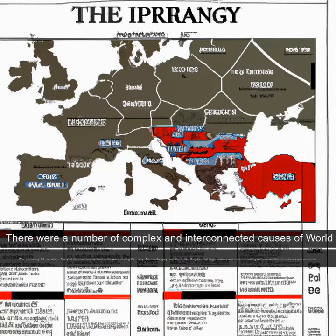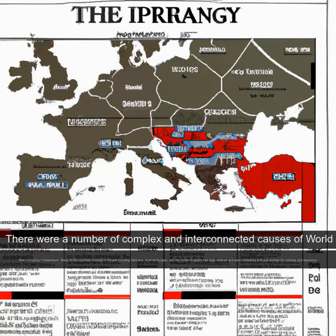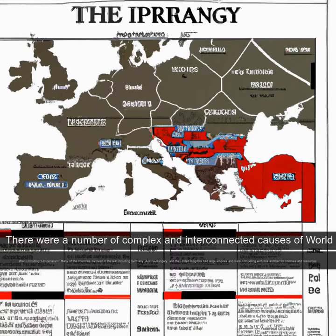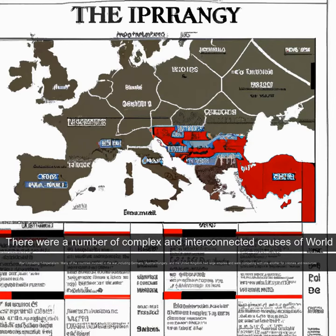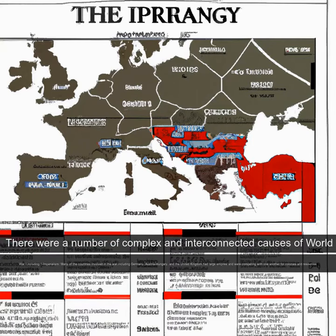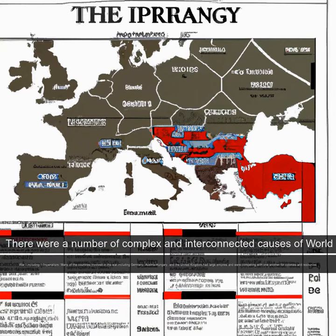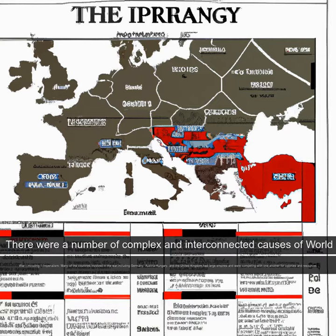There were a number of complex and interconnected causes of World War I, including: 1. Imperialism. Many of the countries involved in the war, including Germany, Austria-Hungary, and the United Kingdom, had large empires and were competing with one another for colonies and resources.